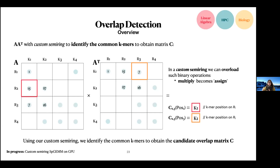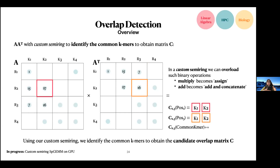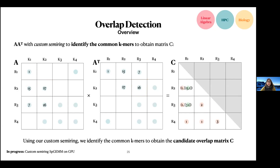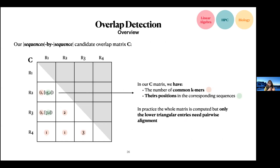We assign the position of k-mer one to the corresponding fields in the output matrix for both reads. In the add operation, we use an add-and-concatenate: the add part tracks how many k-mers a pair of reads has in common, and the concatenate part accumulates the positions of each additional shared k-mer. The result of this operation is a candidate matrix C, where each non-zero contains the number of common k-mers and their positions in the corresponding sequences. In practice we compute the full matrix, but the pairwise alignment step only operates on the lower triangular because it is symmetric.